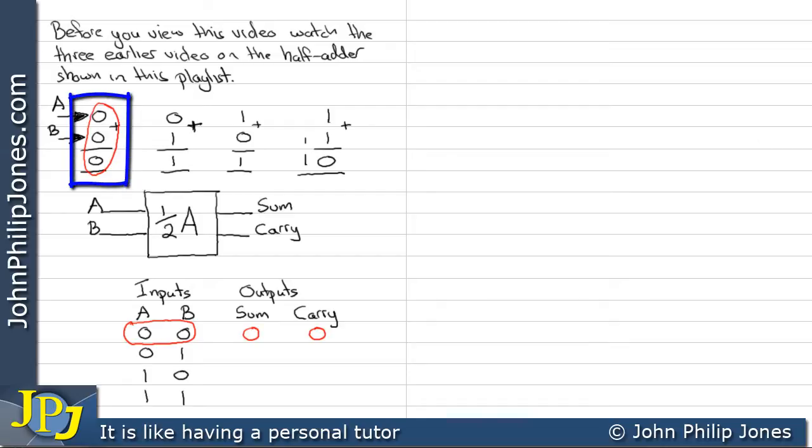If we now have a look at this addition here, we can see that this appears in the truth table as this combination here, i.e. both A and B 0. And we can see that gives us a sum of 0 and a carry of 0.